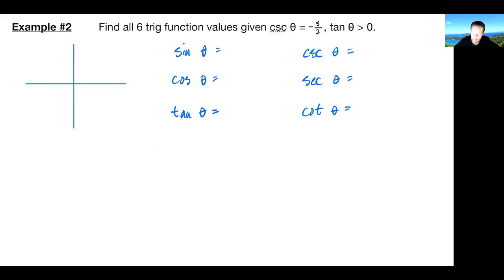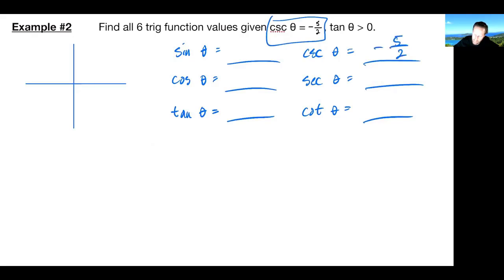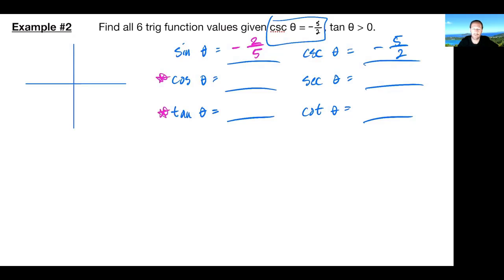What I'm going to do is explain how you should have come up with all these. Remember, one of them I gave you right off the bat is negative five halves, so right then and there without lifting a pen or pencil you should have been able to tell me the reciprocal function. Cosecant's reciprocal is sine, which would be negative two fifths. So we really only need to find four, and of those four we really only need to find two — if I can find cosine and tangent, then I can do the reciprocal to find secant and cotangent.